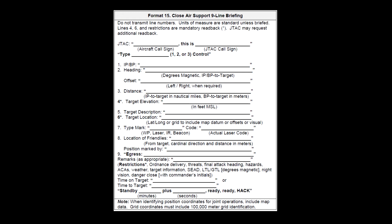Line 8 is for notifying the pilot of friendly locations. Use cardinal directions and the distance in meters from the target to the friendly location. Also use this line to notify if the friendly position will be marked by smoke or IR strobe. Line 9 is used for assigning egress directions to the pilot. Unless there are threats they should avoid, you can simply use pilot discretion.